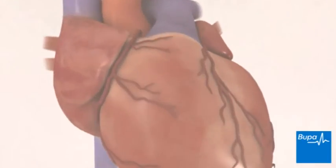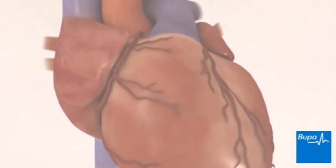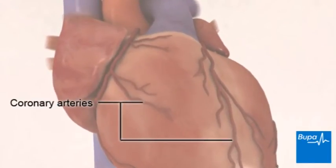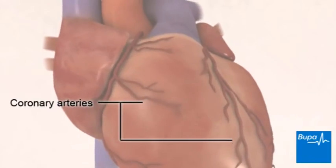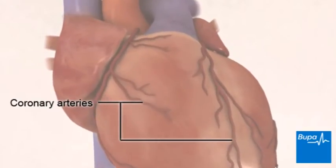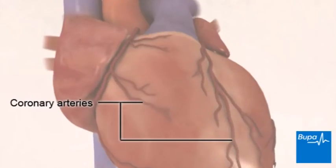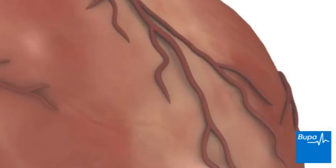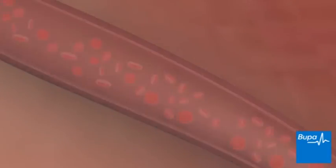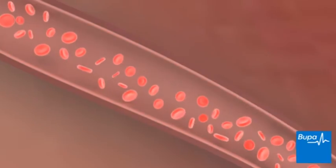The network of blood vessels that branch over the surface of the heart are called the coronary arteries. Atherosclerosis can happen in any part of the coronary arteries. The coronary arteries supply the heart with blood.